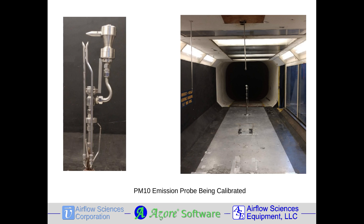Very fine PM is measured using the EPA test protocol of Method 201A, which focuses on PM in the size range below 10 microns, called PM10, and below 2.5 microns, or PM2.5. These measurement methods use a probe head that is a combination of an S-type pitot probe for velocity and a vacuum-assisted sampling nozzle with a cyclone separator for the particulate.